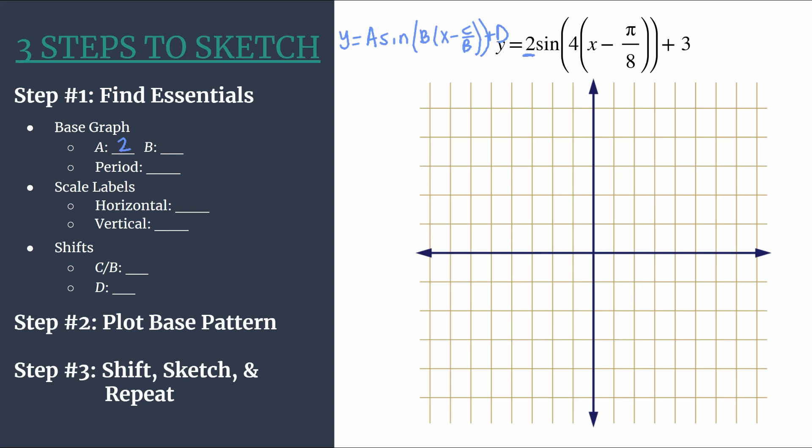Then b, we see, is this 4 that we've already talked about. b tells us how many cycles of our graph should happen between 0 and 2 pi. So in this case, we should have 4 complete cycles of the graph that happened in that space. And b also helps us find the period. And we know to do that, take 2 pi and divide by b. So in this case, we'll have 2 pi divided by 4, or that's just going to be pi over 2. So the length of a horizontal cycle will be pi over 2.